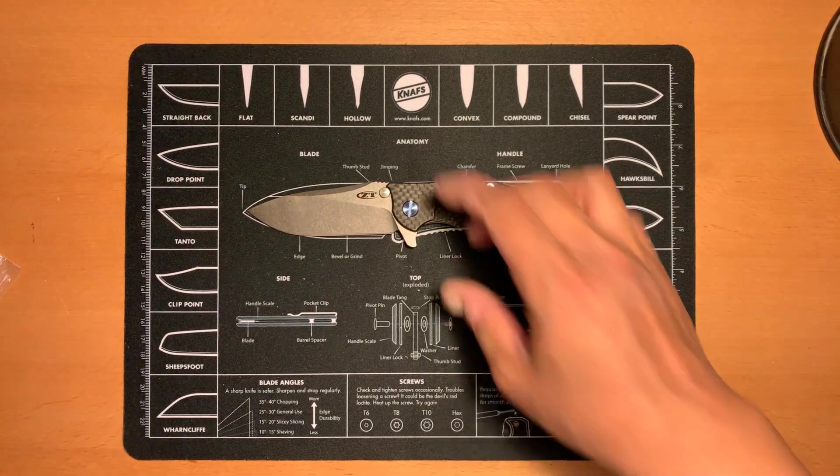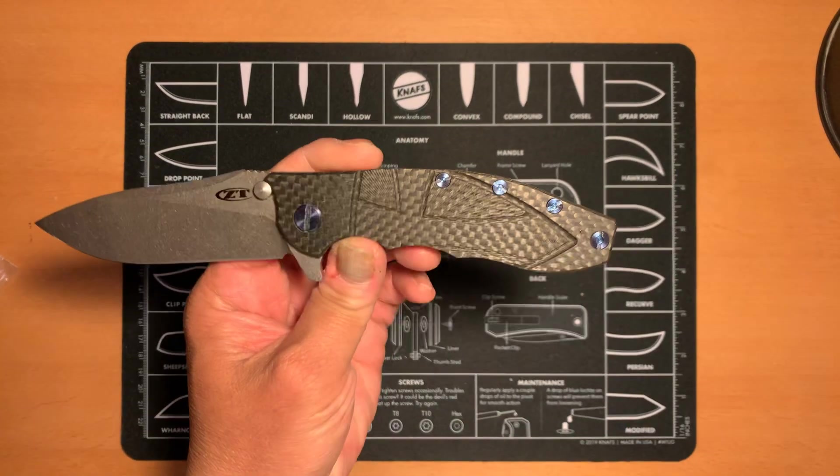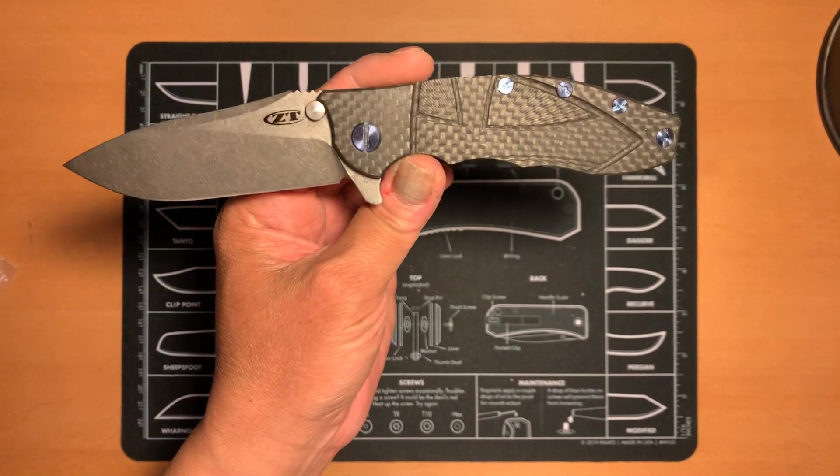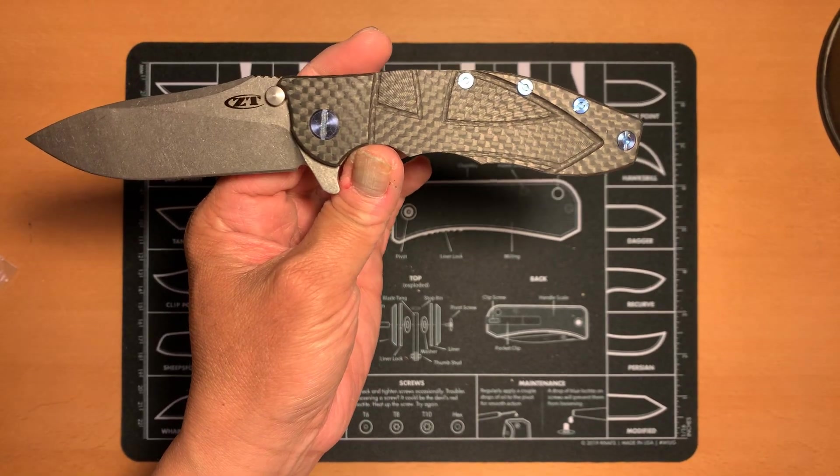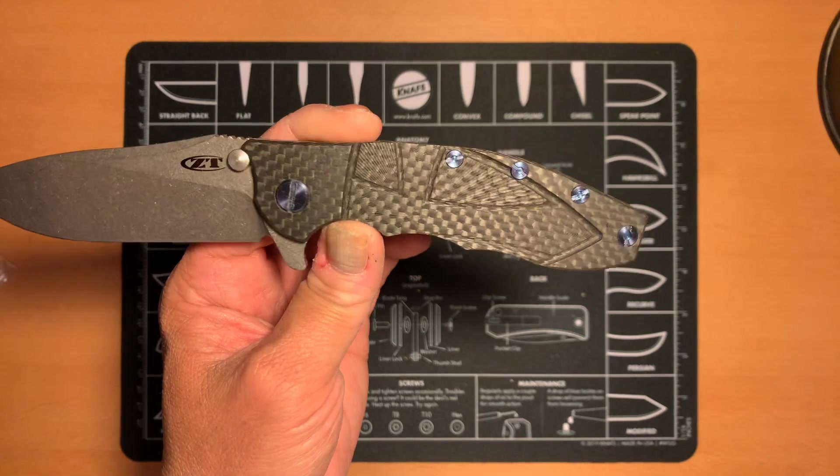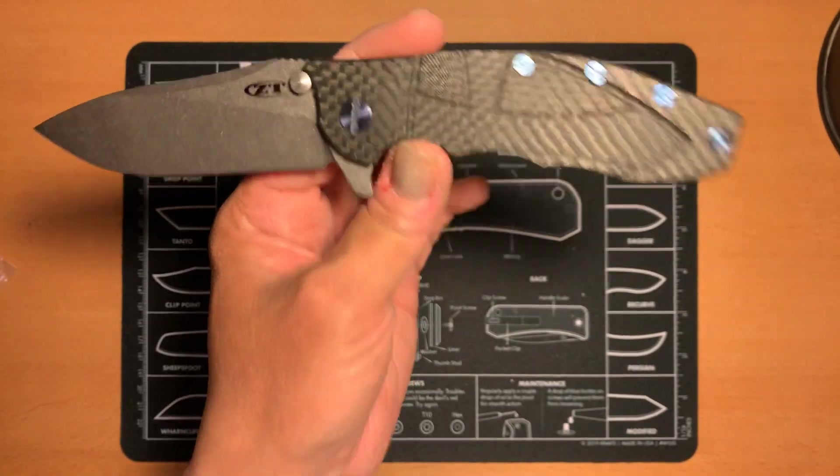The ZT-0562, this knife has pretty much represents the entire knife industry. This knife right here, in my opinion. This knife is in collaboration between Zero Tolerance and Rick Hinderer, who makes the XM-18, which is very popular. And that's what this knife is actually modeled after.